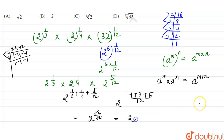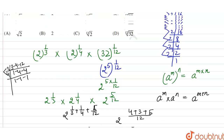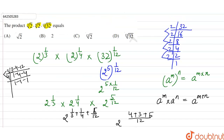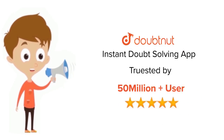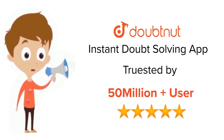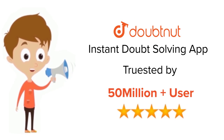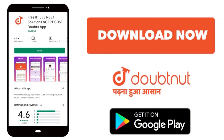This is equal to 2 raised to the power 1, which equals 2. So the correct option will be option B. For class 6 to 12, IIT JEE and NEET level, trusted by more than 5 crore students — download Doubtnet today.